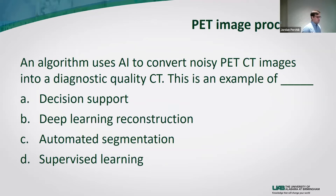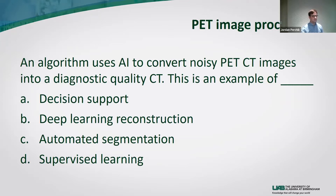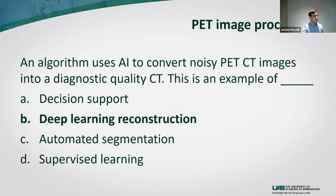First question: An algorithm that uses AI to convert a noisy PET CT image into a diagnostic quality CT is an example of A) decision support, B) deep learning reconstruction, C) automated segmentation, or D) supervised learning. I'll take a moment for you to read this question and decide on your answer. If you decided on deep learning reconstruction, you are correct — give yourself a pat on the back.